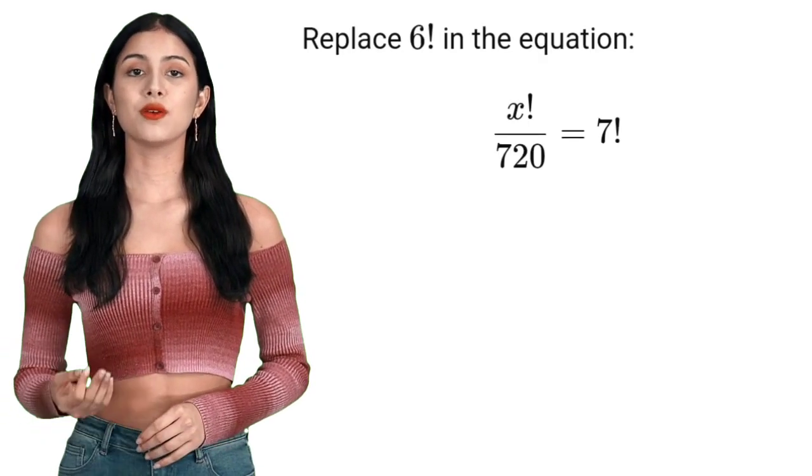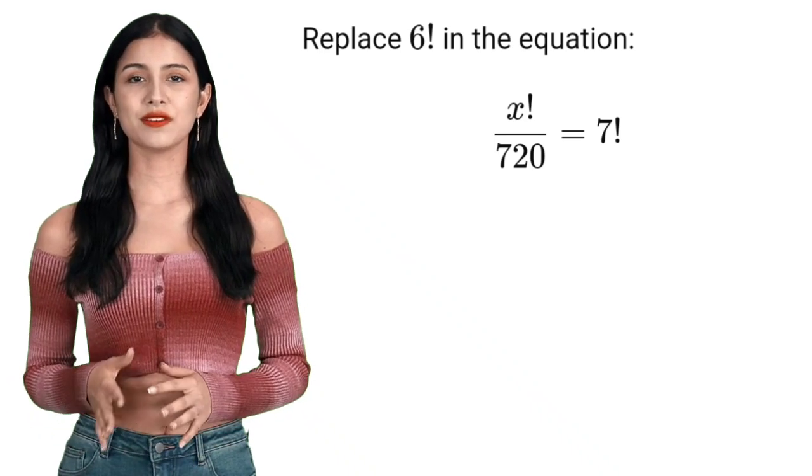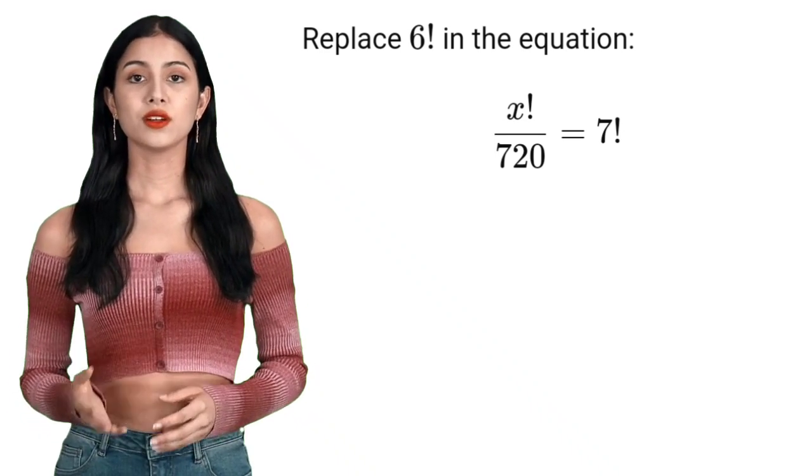So, we replace 6 factorial with 720 in our equation. x factorial divided by 720 equals 7 factorial.